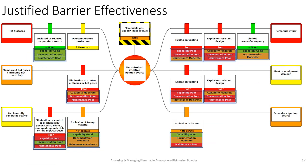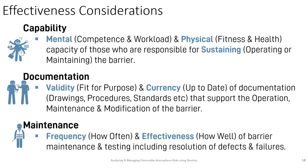It's important to be consistent and objective in the way you determine the effectiveness — good, bad, very bad — for your barriers. Here's a simple example where you consider the people, process, and plant: how capable are the personnel associated with the barrier? How good is the documentation? How well is it maintained? Based on those three simple elements, you can get a sense of how effective your barriers are — their capability, the validity and currency of documentation, and how often and how well maintenance is actually conducted.